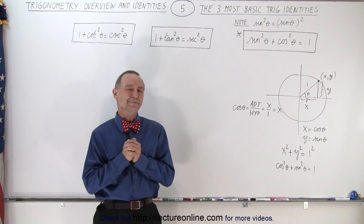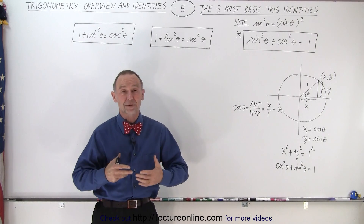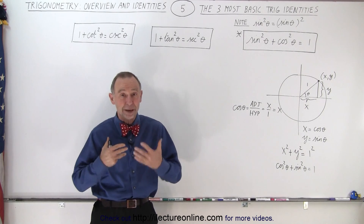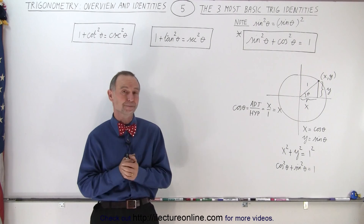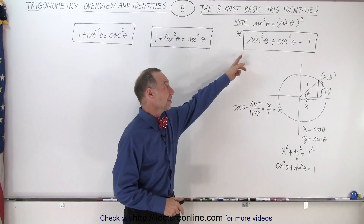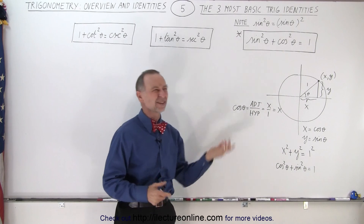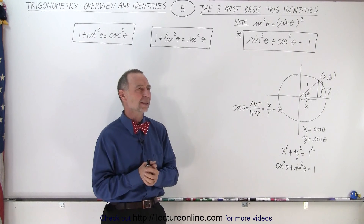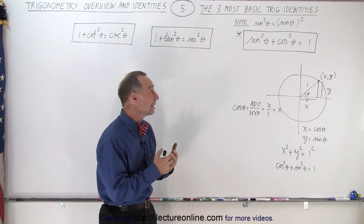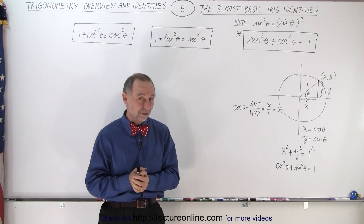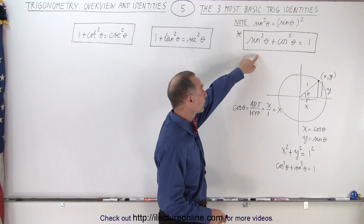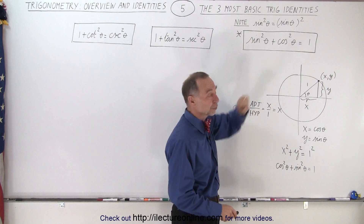Welcome to our lecture online. Now we're going to start talking about some of the basic trigonometric identities. The three most basic ones are the ones here on the board. This one right here is probably the most useful trigonometric identity of all the identities that exist. You definitely want to remember that sine squared of theta plus cosine squared of theta equals 1.